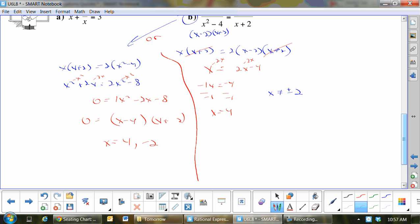What do things add to negative 2, multiply to give me negative 8? x minus 4, x plus 2. So x equals 4 and negative 2. So if I don't factor it out, I get 2 answers. What are the non-permissibles? x cannot equal plus or minus 2. Therefore, you have to reject.